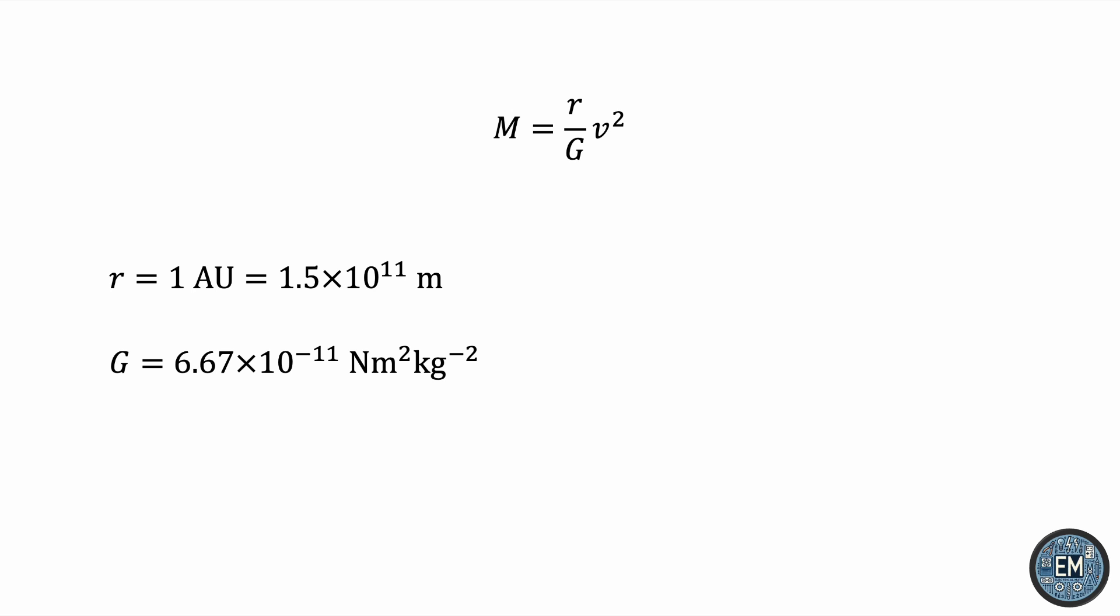We assume the motion to be circular, so the distance that Earth travels is the circumference of that circle, and the time it takes is the period of revolution. So v equals 2πr/T. Substituting this in the equation, we get 4π²r³/GT².